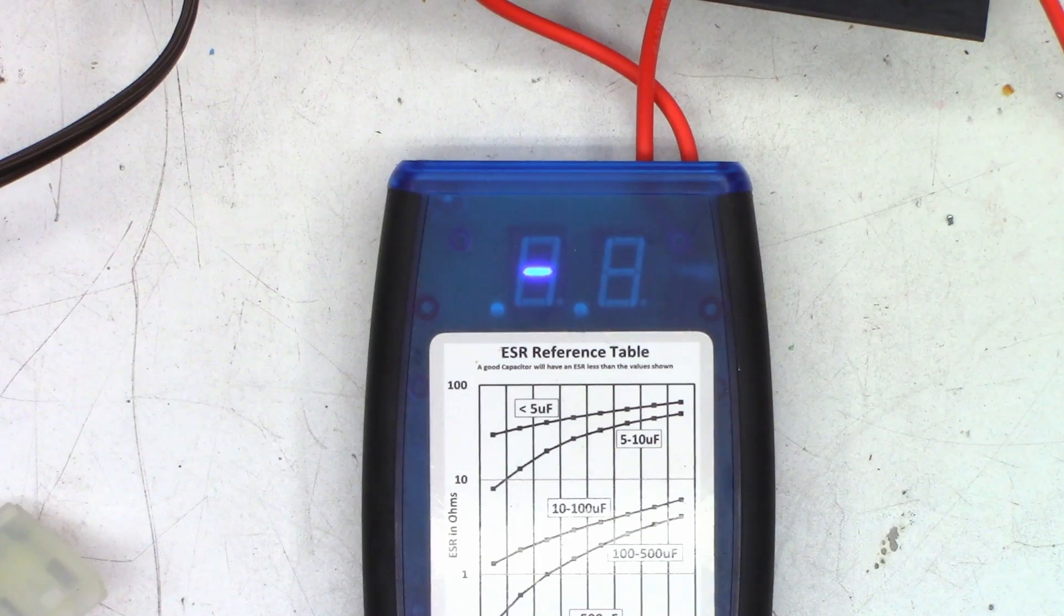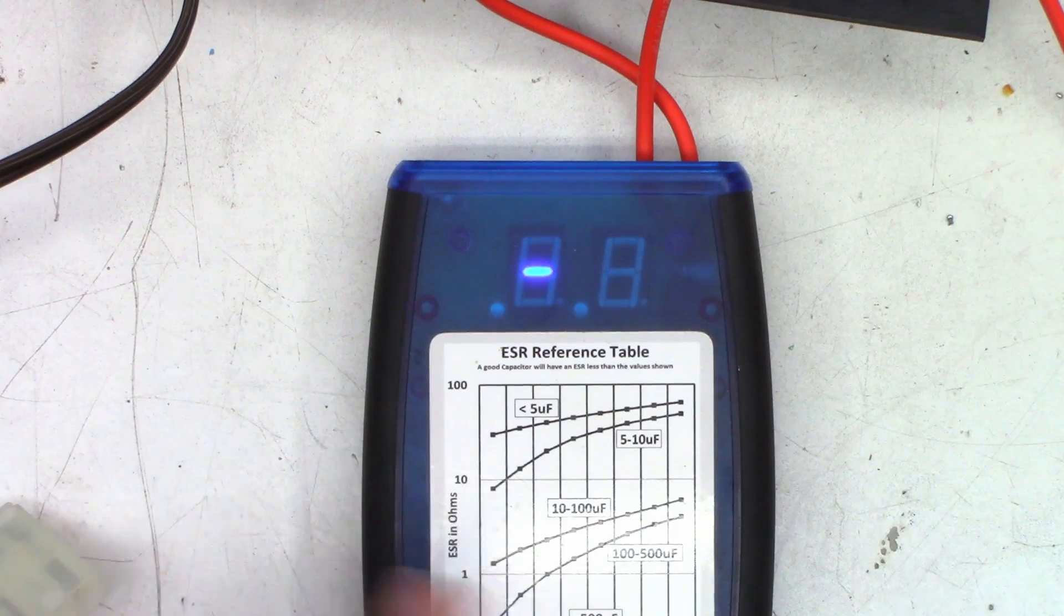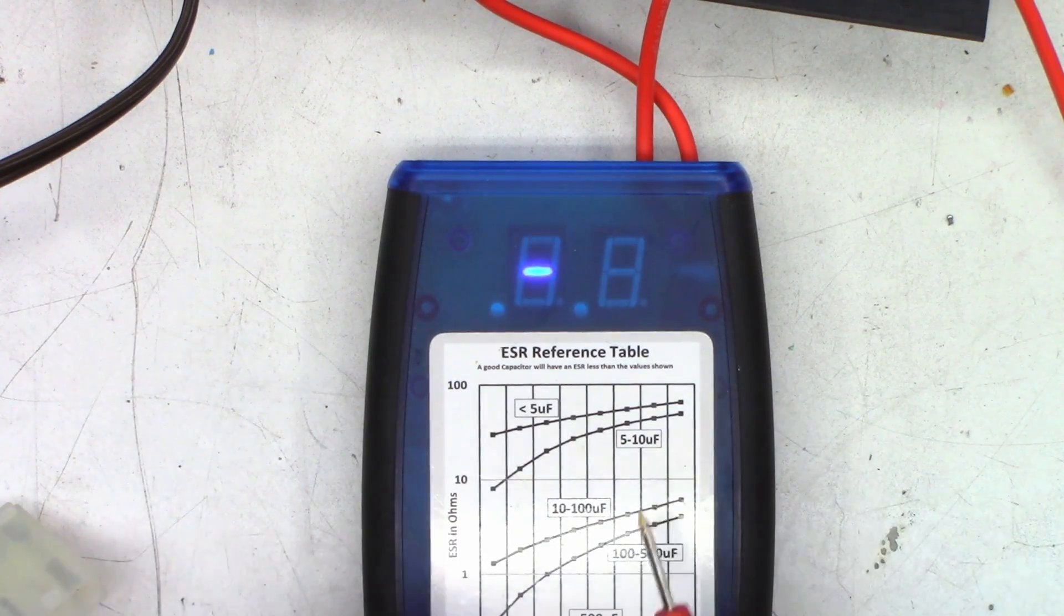And we'll go ahead and check the new caps, just to make sure that they're in good working order. First, a 220, and I'm seeing 0.06. I'm very happy with that. The other 220, 0.06 again, excellent. And now the 10s. First one is 0.49, so half an ohm on that one. That's great.